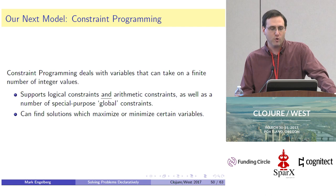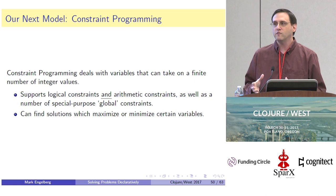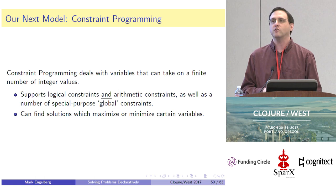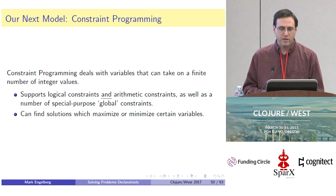Moving on to our third and final model: constraint programming. Constraint programming is another declarative problem-solving tool that deals with variables that can take on a finite number of integer values. Constraint programming solvers usually come with a wide assortment of different kinds of constraints: logical constraints, arithmetic constraints, and a whole bunch of special-purpose global constraints. These create a really rich domain for expressing a wide variety of problems declaratively.